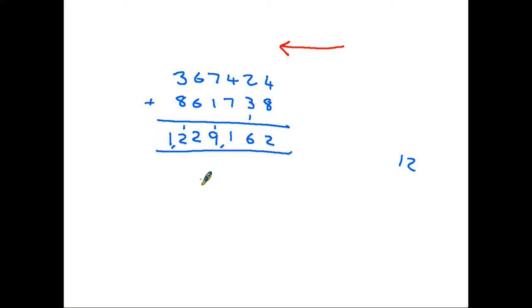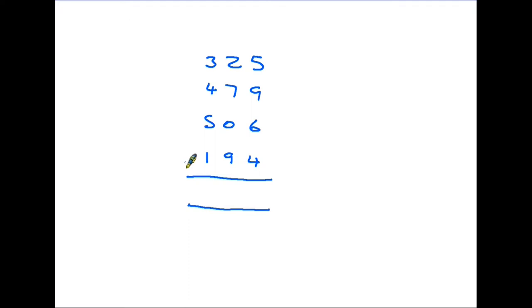Now let's have a look at a second example. In this example the numbers are not as large but there are more of them but we follow the same rule. The first thing we are going to do is add these numbers up in the first column. So let's be careful as to how we do that. 5 plus 9 is 14 plus 6 is 20 plus 4 is 24.